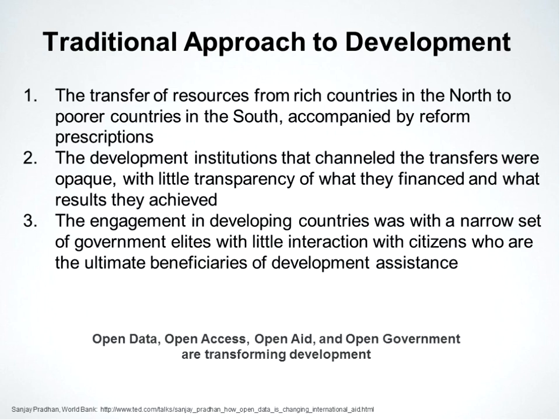The traditional approach to development was the transfer of resources from rich countries in the north to poorer countries in the south, typically accompanied by reform or policy prescriptions telling our partners what needed to be done. The development institutions that channeled the transfers were opaque — there was very little transparency of the projects that were financed and the results that were achieved. Engagement with developing countries was with a narrow set of government elites; we were really not engaging with the citizens of those countries. But with open data, open access, open aid, open government, and the open agenda broadly, we are transforming the way development is done.